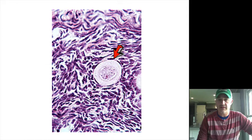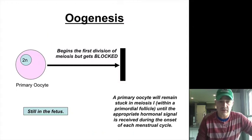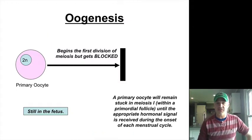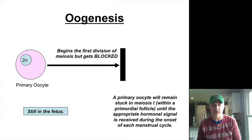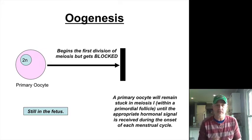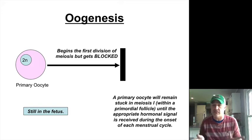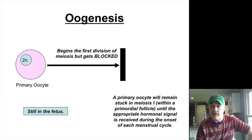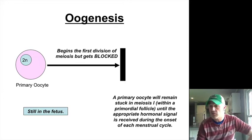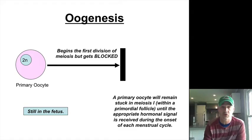At this point, that primary oocyte still in the fetus starts to undergo the first stage of meiosis but gets blocked partway through. So all the egg cells that a female is going to have are present there in the fetus, and they start this process and are blocked in meiosis one until we get the onset of menstruation during puberty.